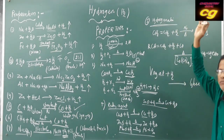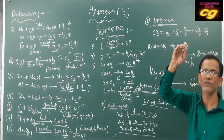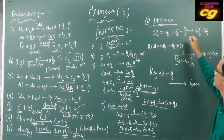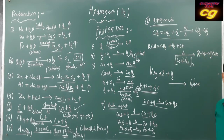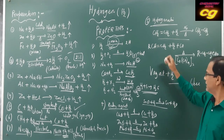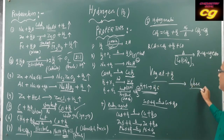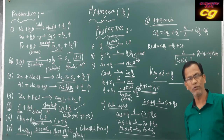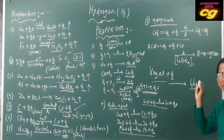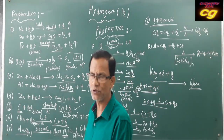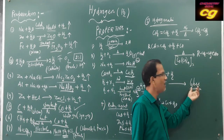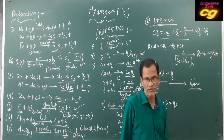Hydrogen is also used in hydrogenation reactions. Hydrogenation means addition of hydrogen — converting unsaturation to saturation, such as alkene to alkane. Vegetable oil is an unsaturated compound; when it undergoes hydrogenation, it converts to ghee, which is a saturated product — a saturated fat. This conversion of vegetable oil to ghee is called hydrogenation.